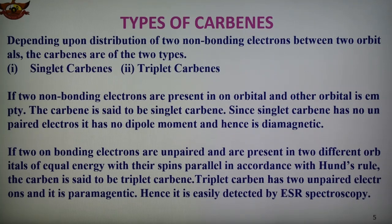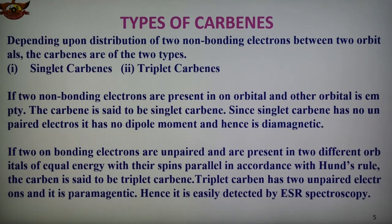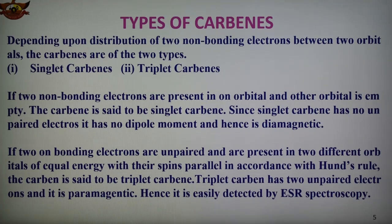In triplet carbene, the 2 electrons are unpaired and present in 2 different orbitals of equal energy with their spins parallel — according to Hund's rule — and this is known as triplet carbene. In triplet methylene, the 2 electrons in CH2 have the same spin and are present in different orbitals. Therefore triplet carbene has a permanent magnetic moment, has 2 unpaired electrons, is paramagnetic in nature, and can be easily detected by ESR (electron spin resonance) spectroscopy.